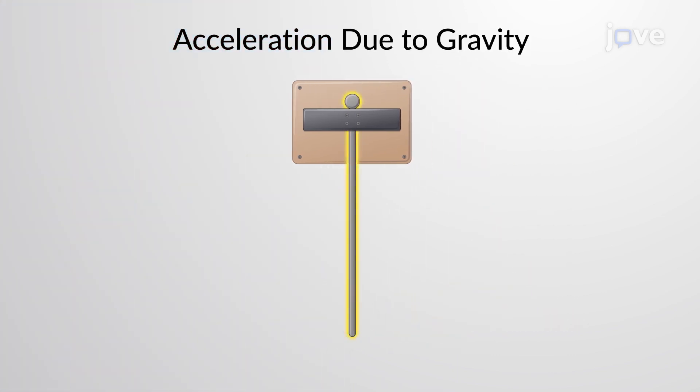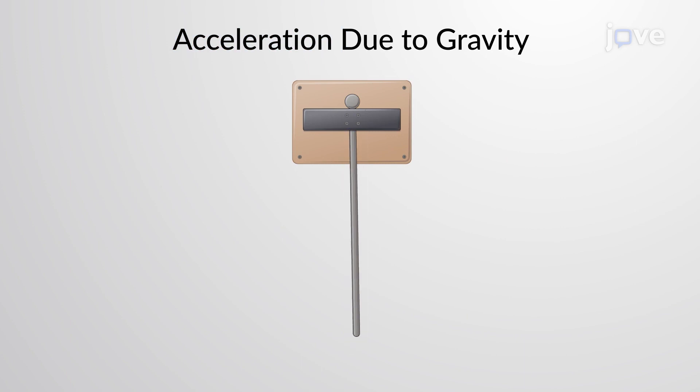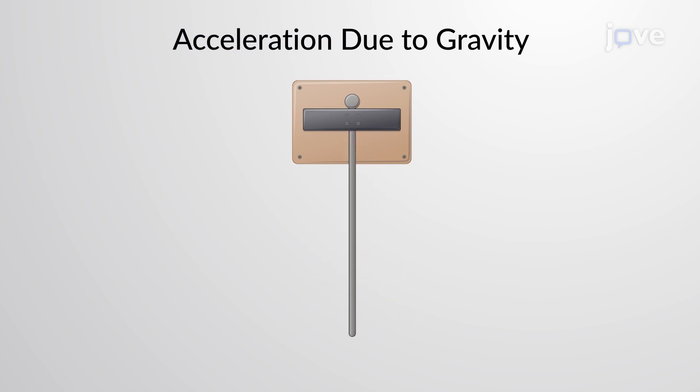Consider a uniform rod of length L and mass M, suspended from one end. The distance between the pivot point and the center of mass will be measured.